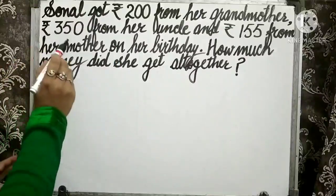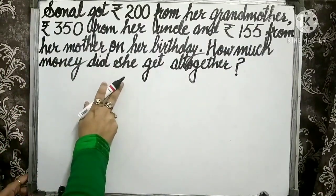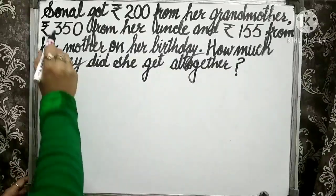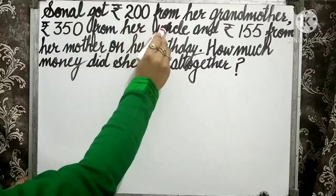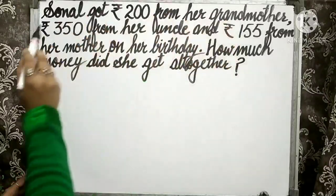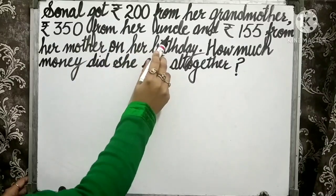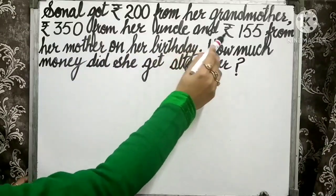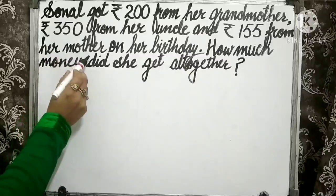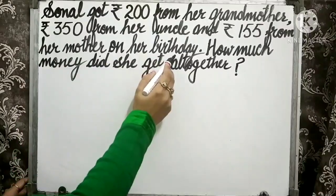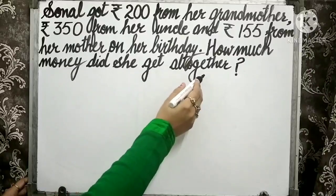Now let's discuss how to solve statement sums related to money. The question is: Sonal got Rs. 200 from her grandmother, Rs. 350 from her uncle, and Rs. 155 from her mother on her birthday. How much money did she get altogether?